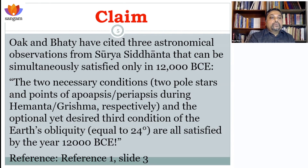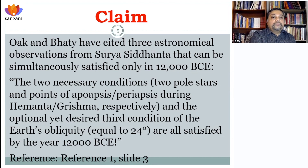They say there are two necessary conditions: first, two pole stars, which they say is satisfied in 12,000 BCE. They also reference the points of apoapsis and periapsis, which they relate to information on seasons. And finally, the Earth's obliquity, which is given as 24 degrees in Surya Siddhanta. I am going to go over all these points one by one.